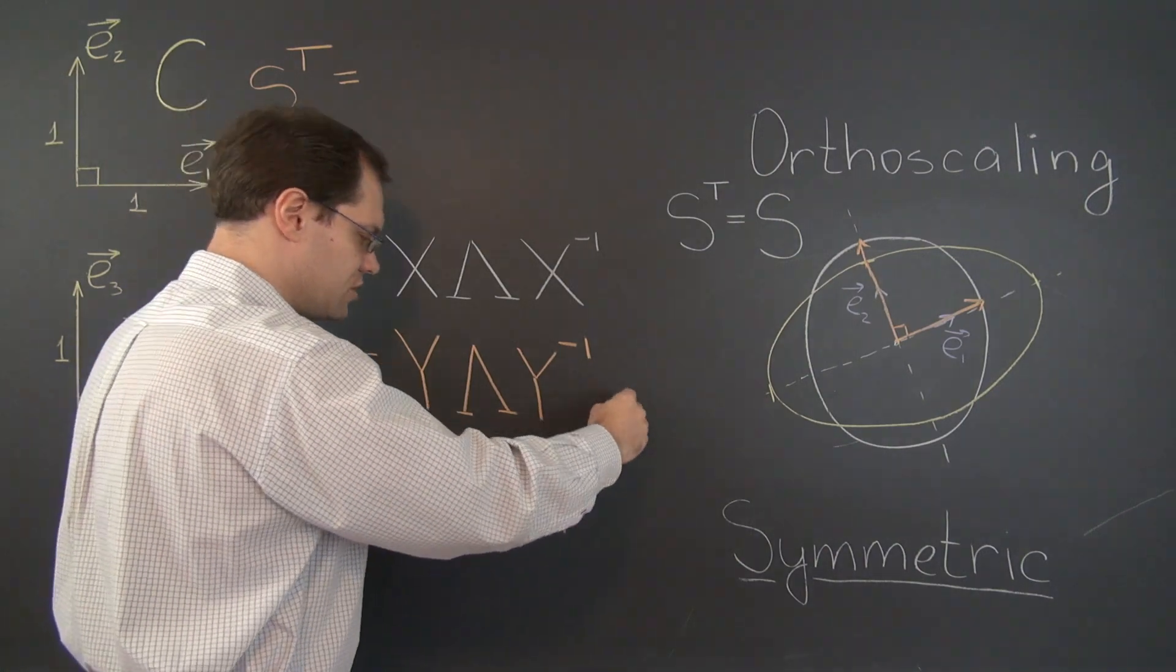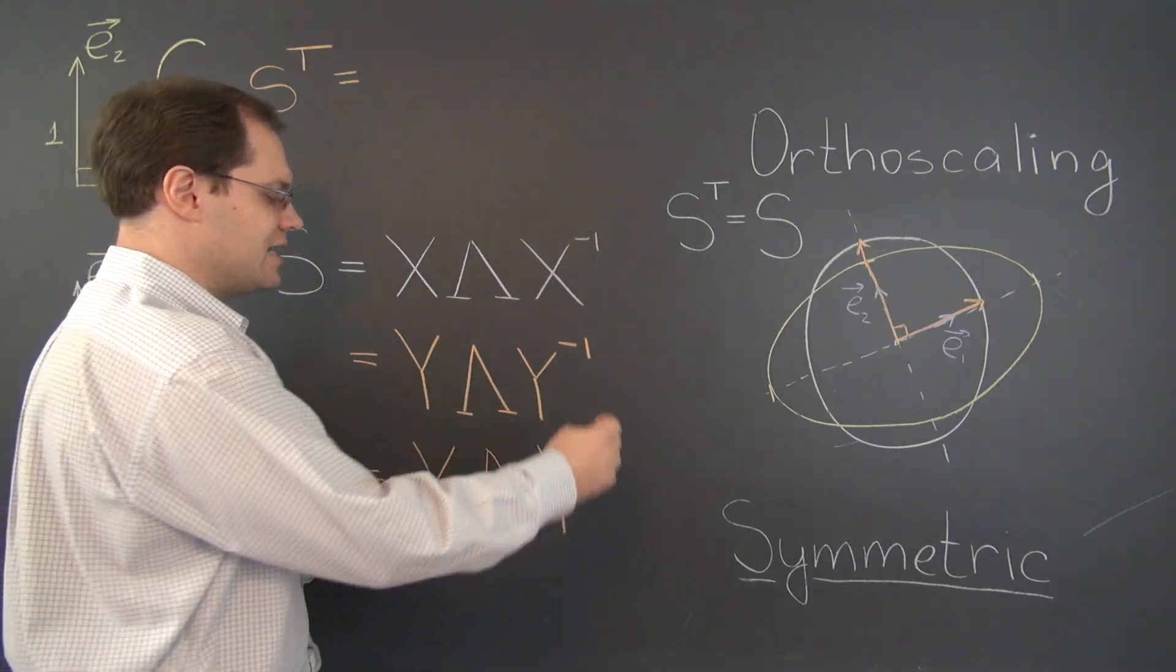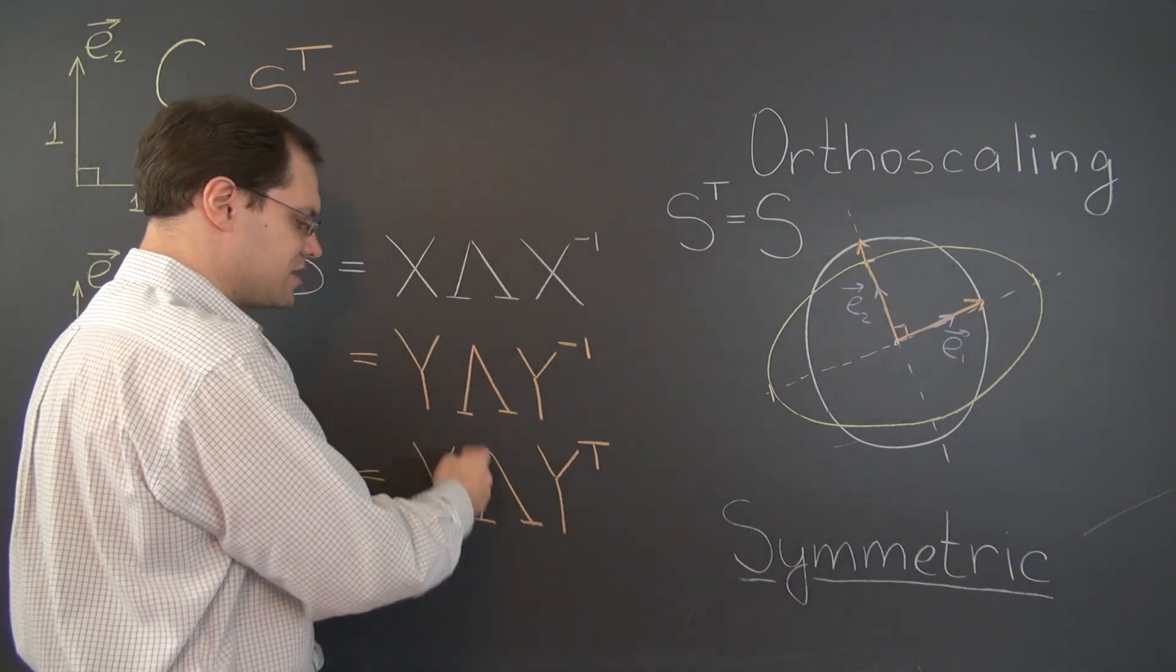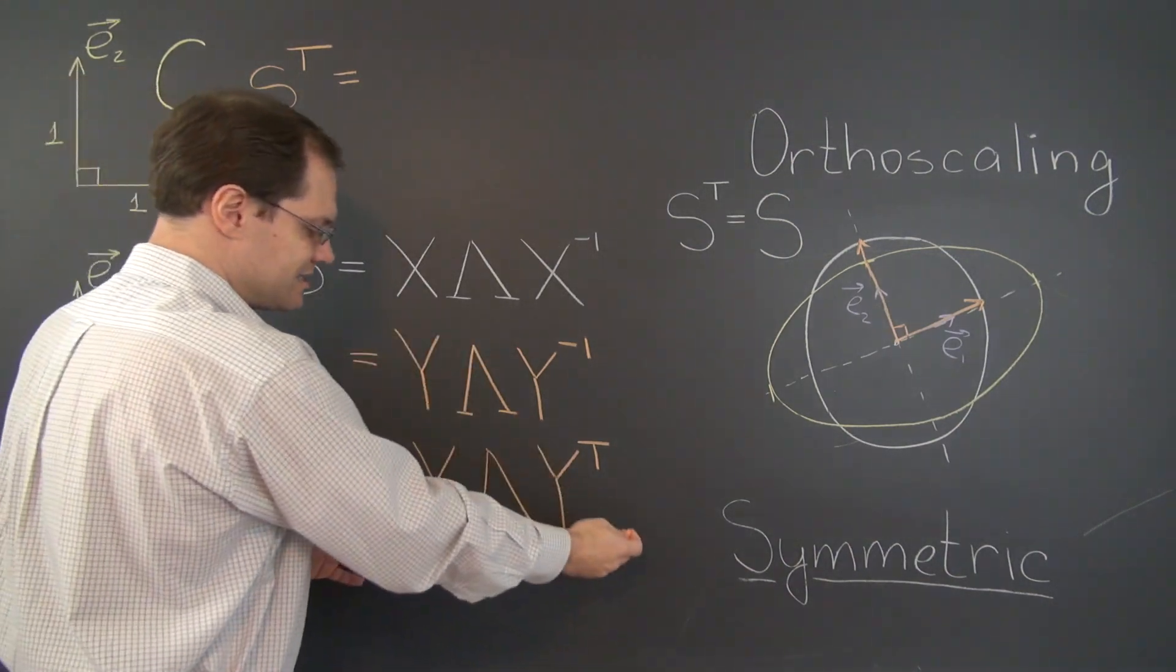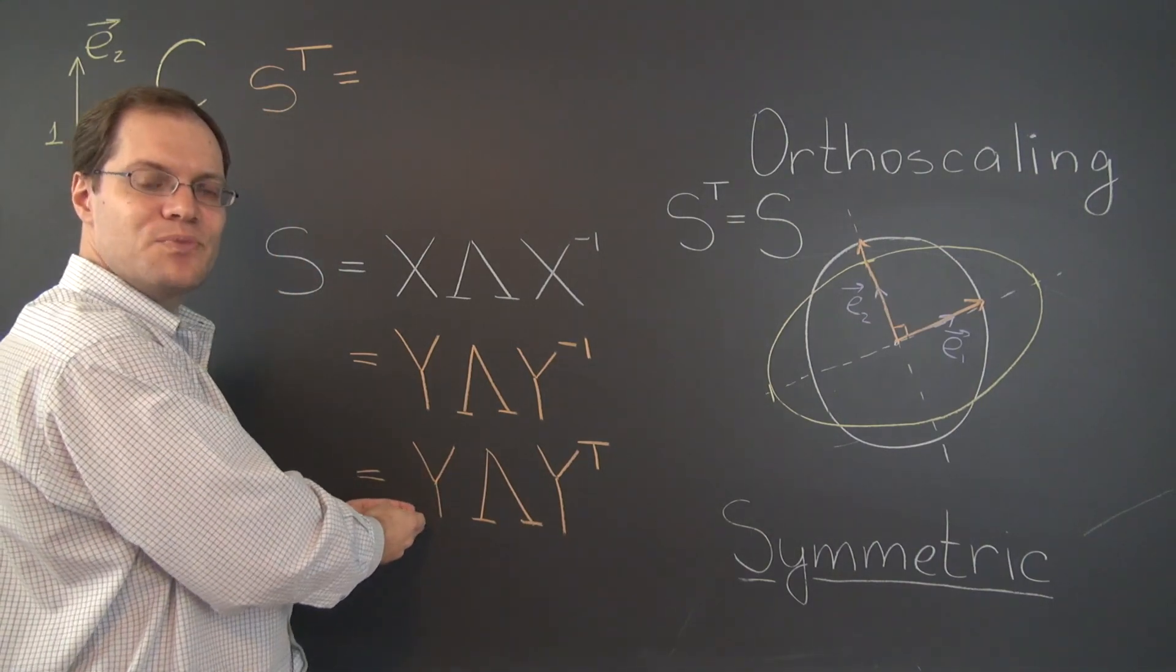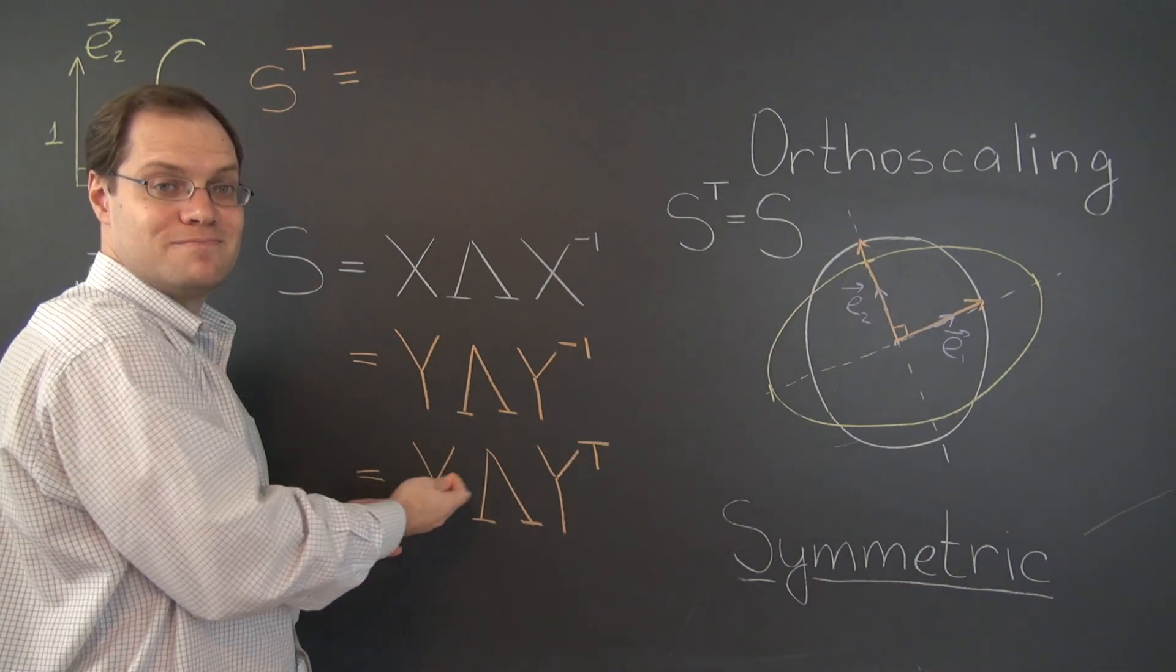And as you know, the transpose of a product is the product of the transposes in the opposite order. So S transpose is the product of these matrices in the opposite order. Let's see what happens.